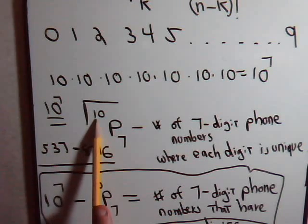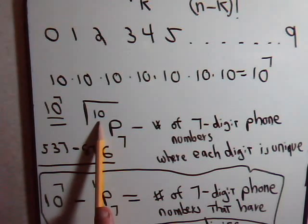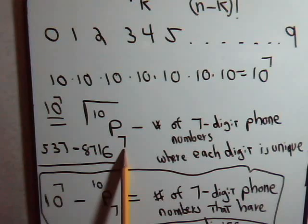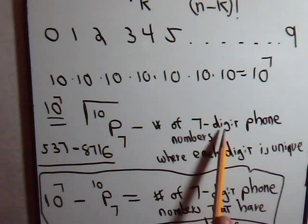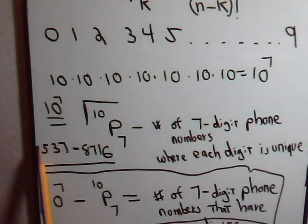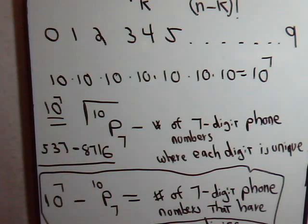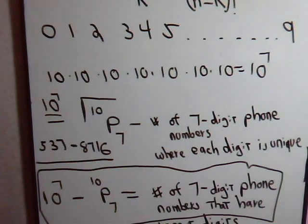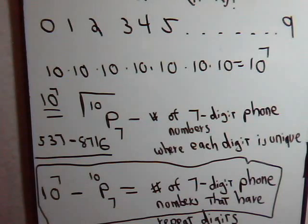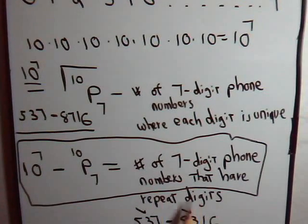Because here we have ten numbers, ten distinct numbers, and we're going to select seven different ones. So this will give us a seven digit telephone number where there is no repeat in there. Here then, if we subtract this number from the total number that's possible, then that gives us the number of seven digit telephone numbers that will have repeat digits.